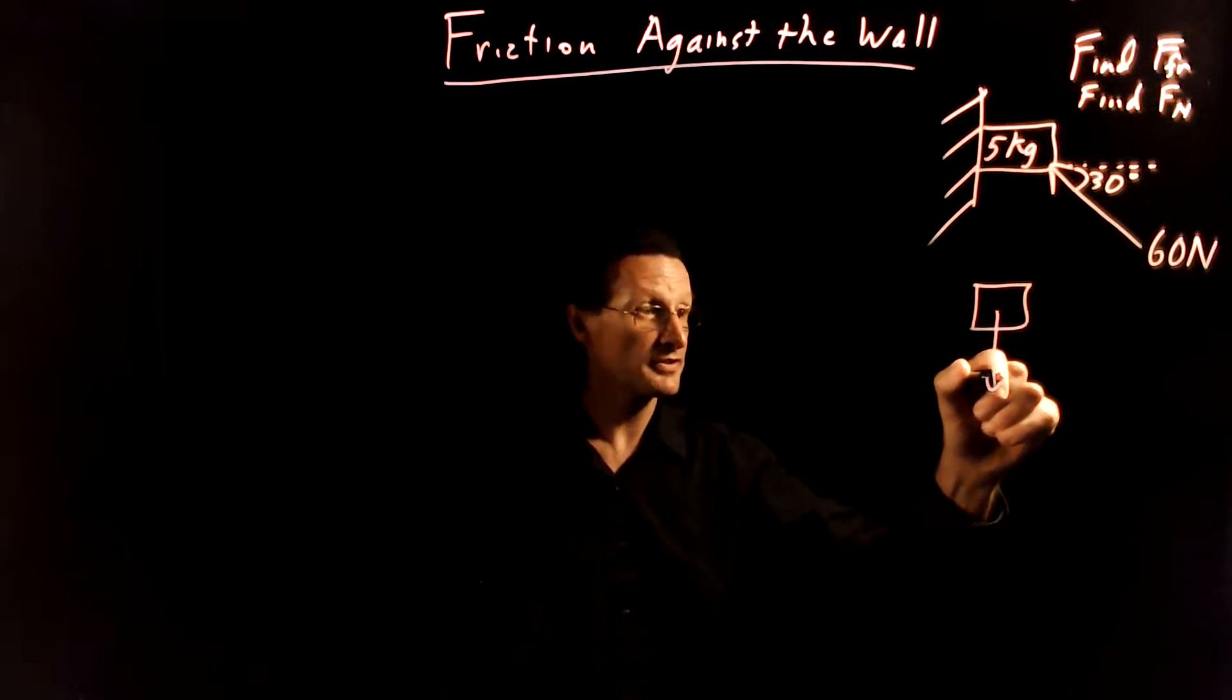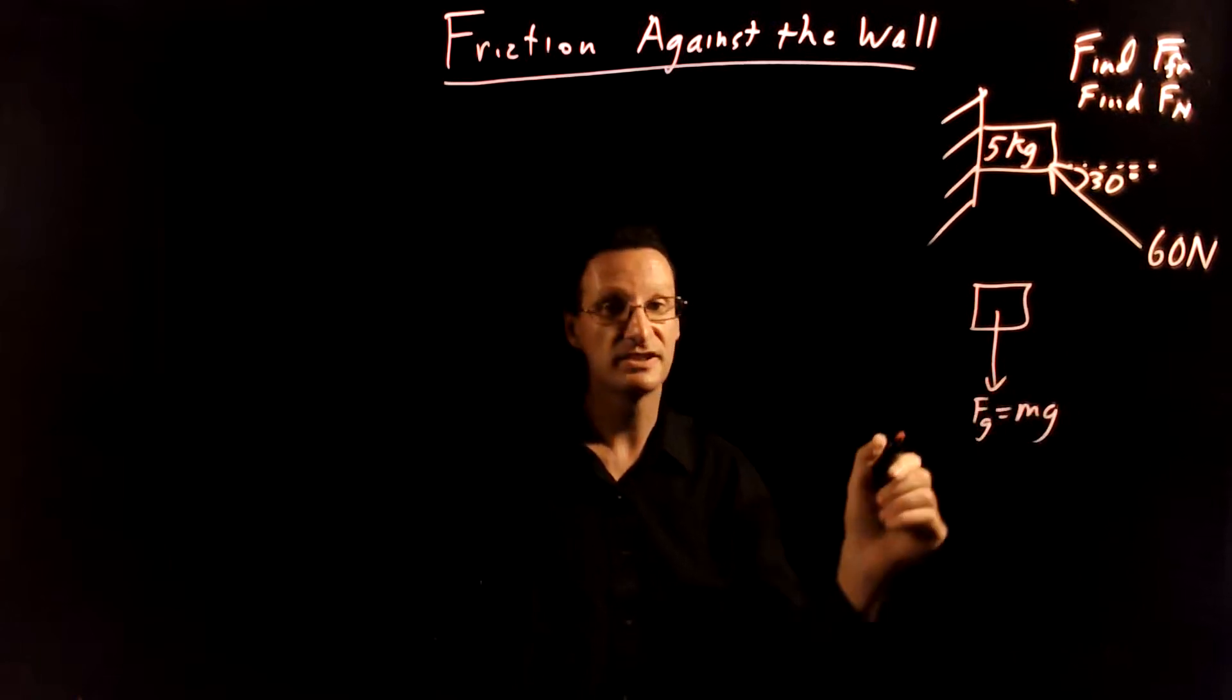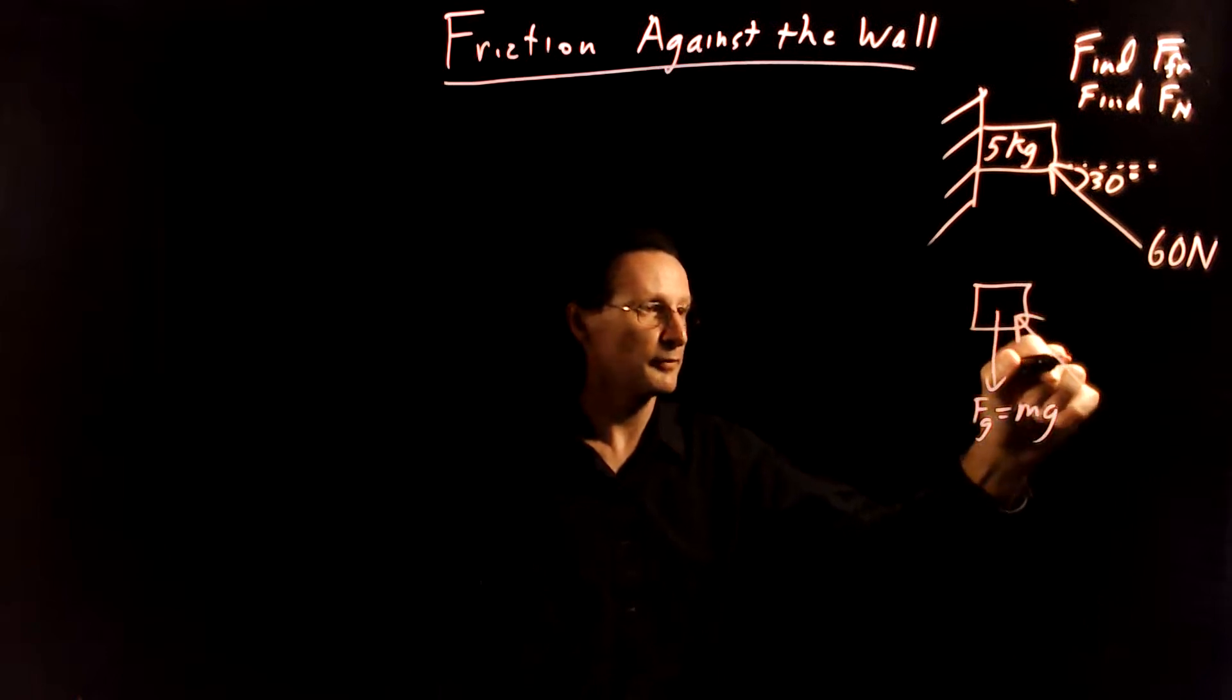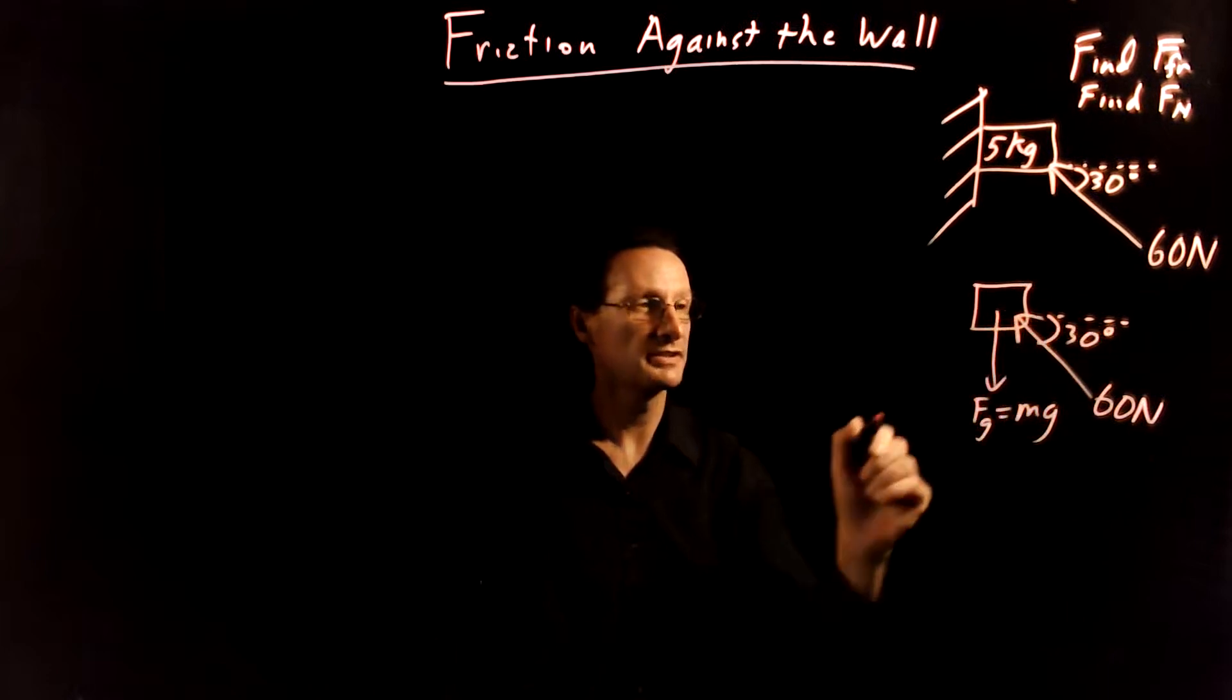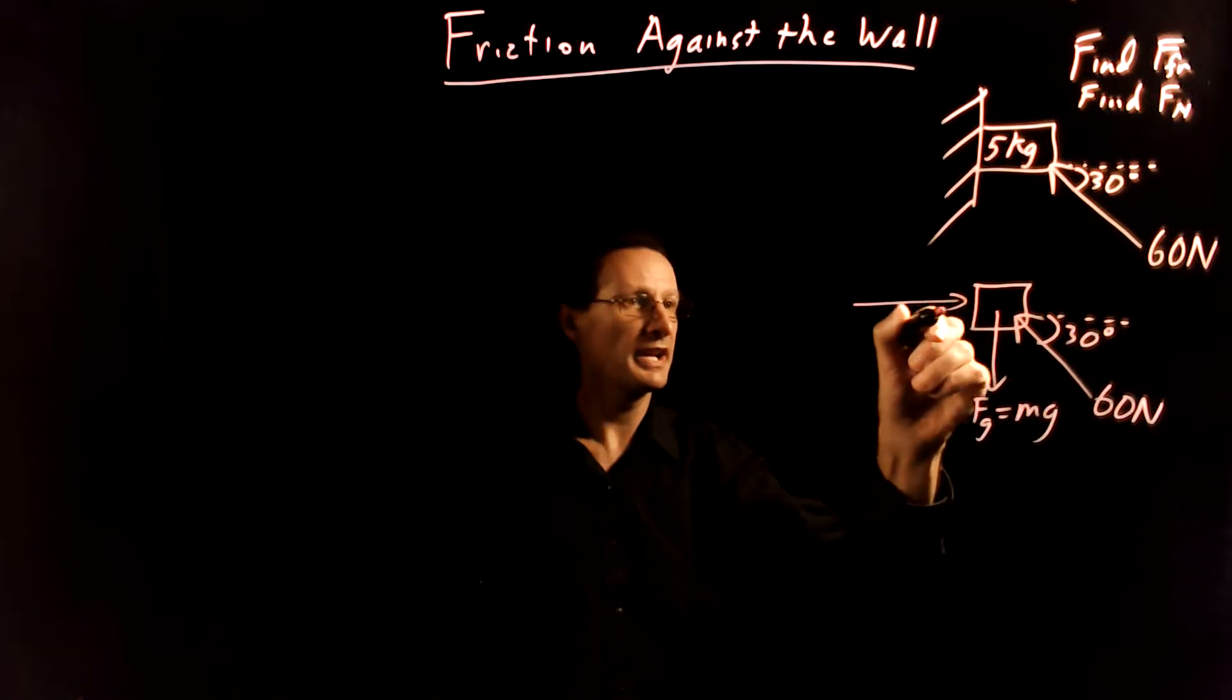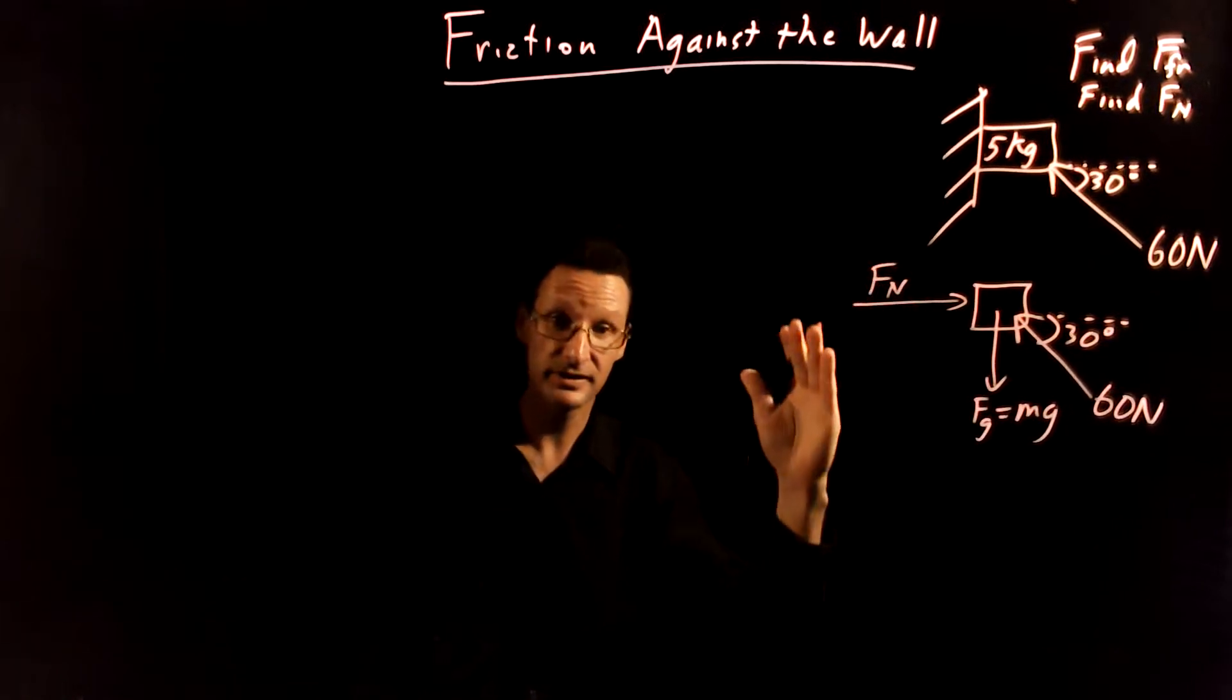It's on the surface of the earth so it's going to feel a gravitational force which is mg. Of course it feels this applied 60 Newton force that is at an angle of 30 degrees to the horizontal. It's touching the wall so it's going to feel a normal force from the wall that's perpendicular to the contact surface of the wall.